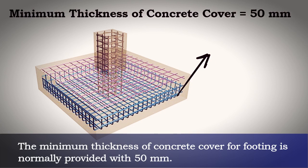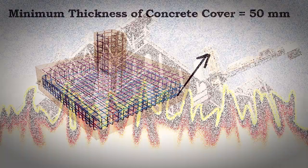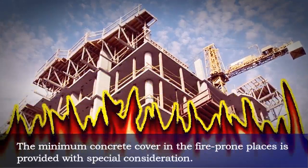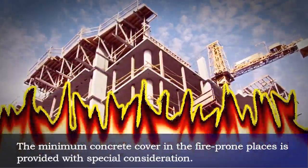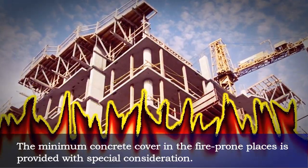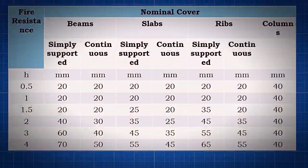The minimum thickness of concrete cover for footing is normally provided at 50 mm. The minimum concrete cover in fire-prone places is provided with special consideration. The table displayed on the screen shows the minimum thickness of concrete cover required to satisfy the accepted period of fire resistance.